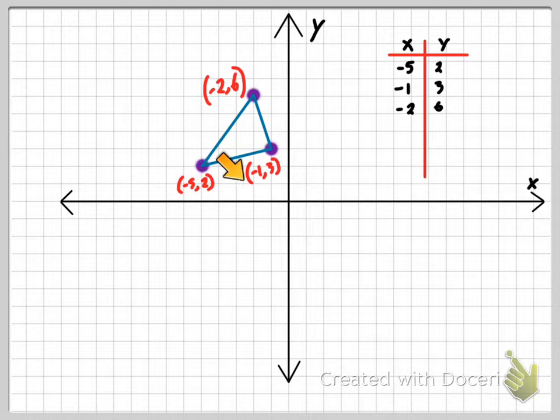So I'm going to start with this negative 5, 2 and work my way around. So I have negative 5, 2, negative 1, 3, negative 2, 6. I'm just going to list them in order. I just went counterclockwise. You could have gone clockwise. But here's the trick. Whichever point you start with, you have to list again. So I'm going to have to list my negative 5, 2 again. That's the real trick.